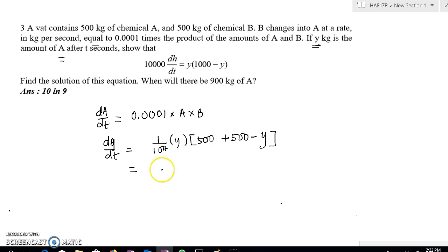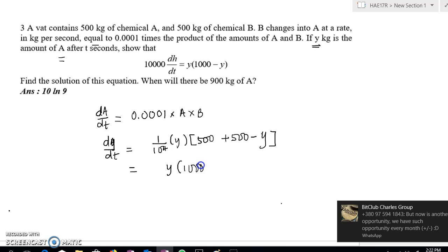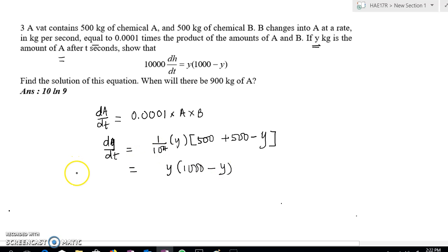So we end up with the equation that looks like this: 1000 minus Y. And 10 to the power of 4 we can bring over the other side, it becomes 10^4 dY/dt. So the next step is once you got the expression.